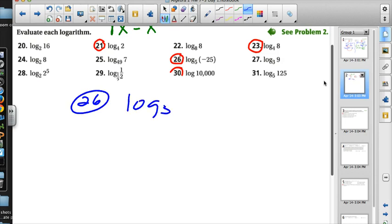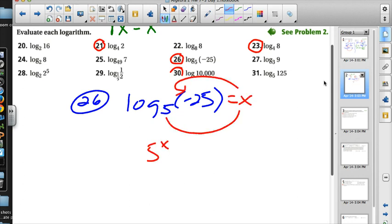Number 26, logarithm base 5 of negative 25. Set it equal to x. Snail shell, 5 to the x equals negative 25. So raise 5 to some power, and magically it becomes a negative 25. There's no way to do that. We can't raise it to a power and somehow make it negative. This is not solid math here. So this is not possible. And when things are not possible, they're called undefined. We cannot do that, therefore it is undefined.